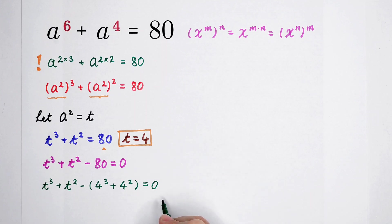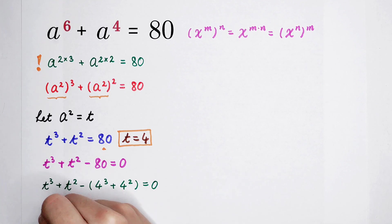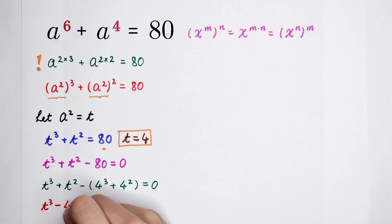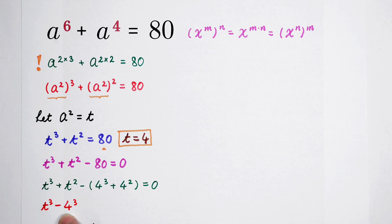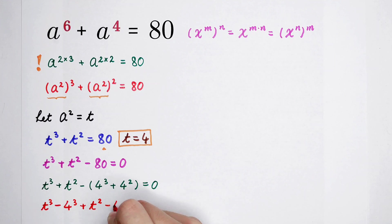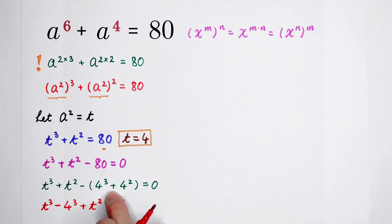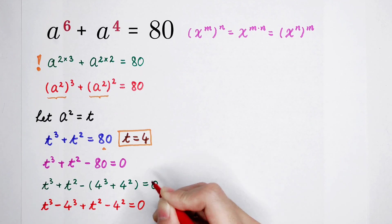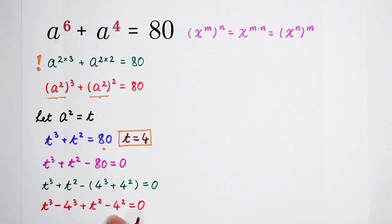Don't forget the bracket. We group: t cubed minus 4 cubed, and then plus t squared minus 4 squared. For the t cubed minus 4 cubed part, we use the formula a cubed minus b cubed equals (a minus b)(a squared plus ab plus b squared). The t squared minus 4 squared part can also be factorized.